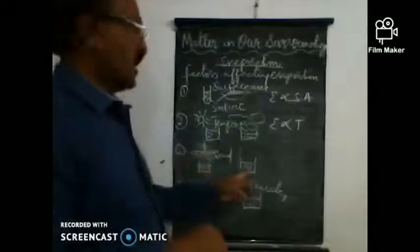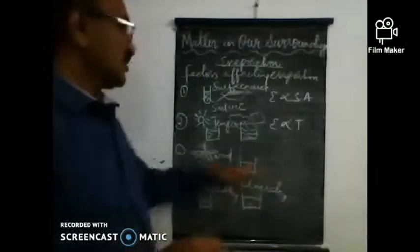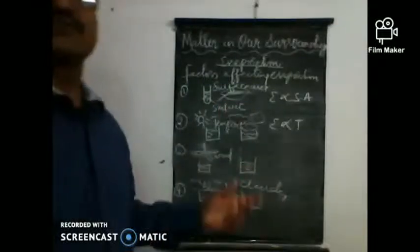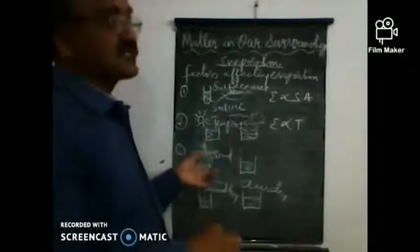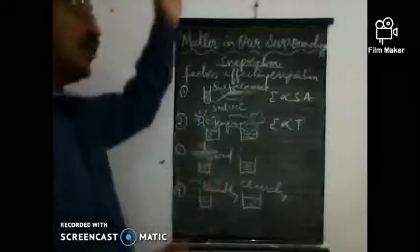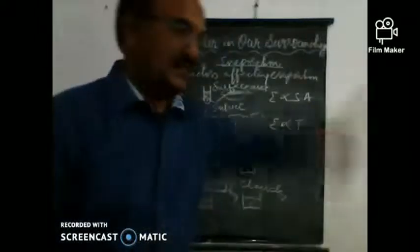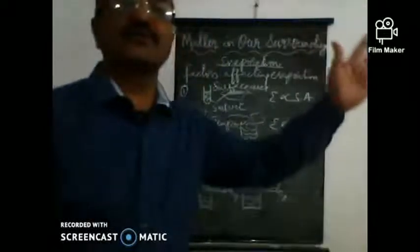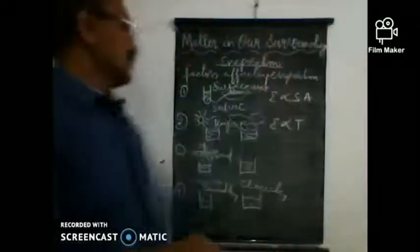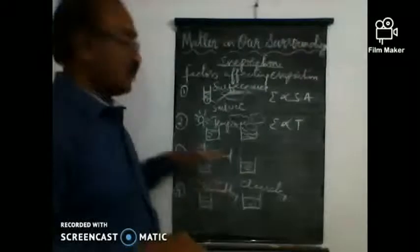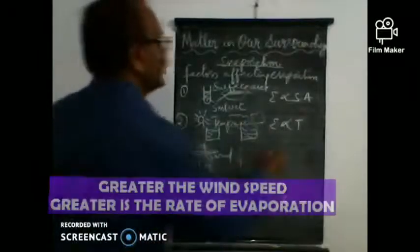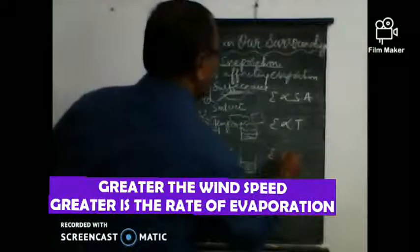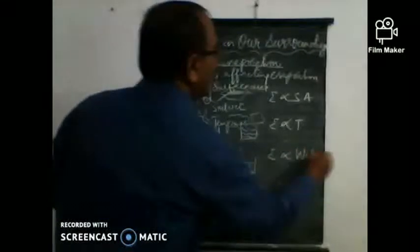Next, we keep one vessel of water under a fan and another not under a fan. You'll find evaporation is faster under the fan because the wind blows away the particles on the water surface, increasing the rate of evaporation. So evaporation is directly related to wind speed.